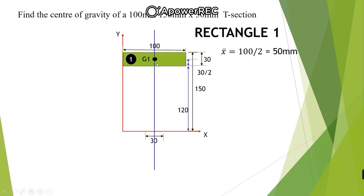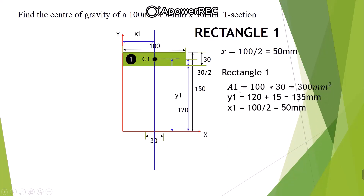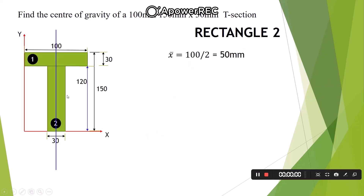The distance of g1 from the base of the rectangle is 30/2 = 15, but we need the distance from the X-axis, which is y1. So y1 = 120 + 30/2 = 120 + 15 = 135 mm. x1 is half of 100, so x1 = 50 mm. Therefore: a1 = 100 × 30 = 3000 mm², y1 = 135 mm, x1 = 50 mm.